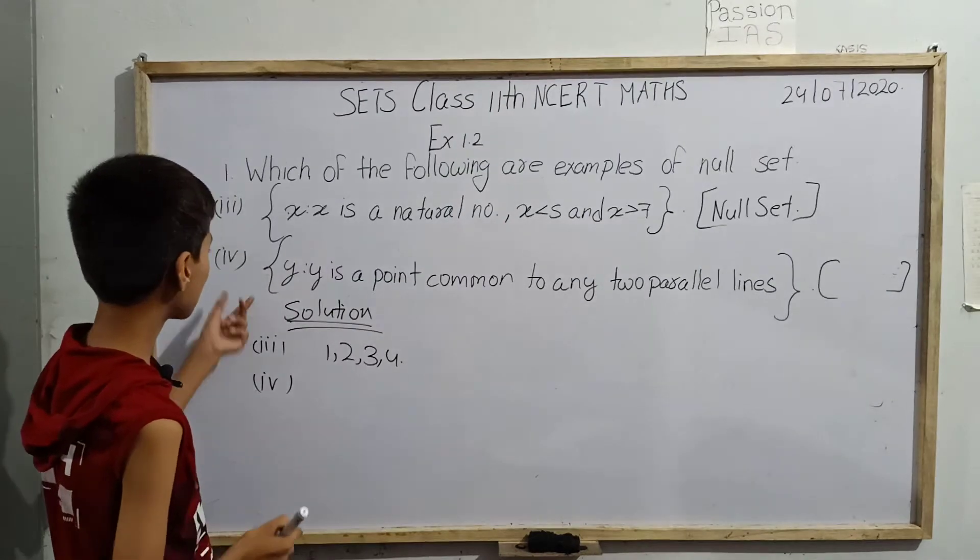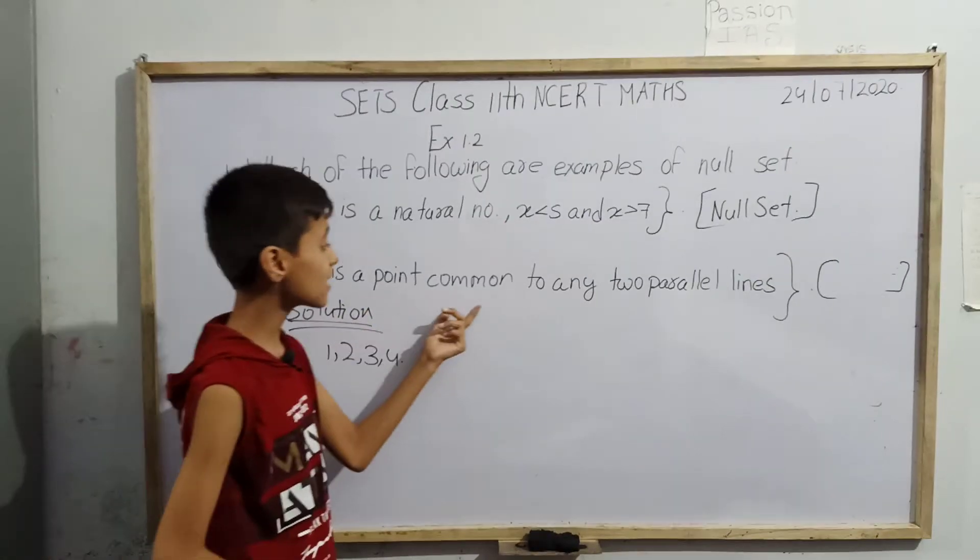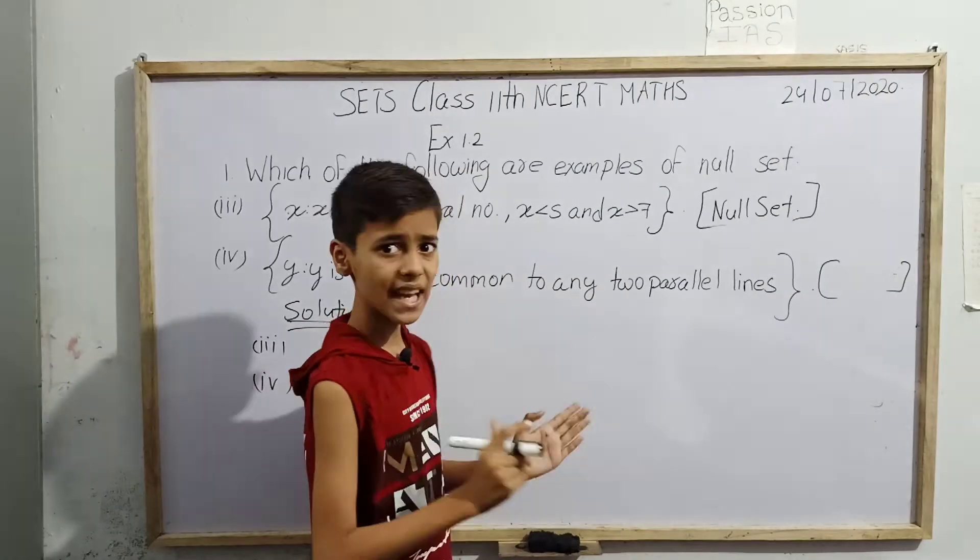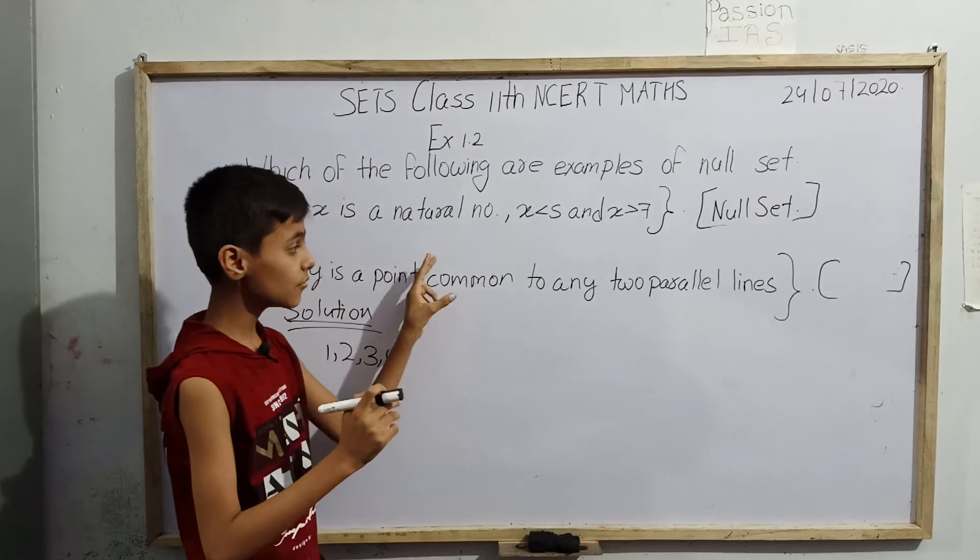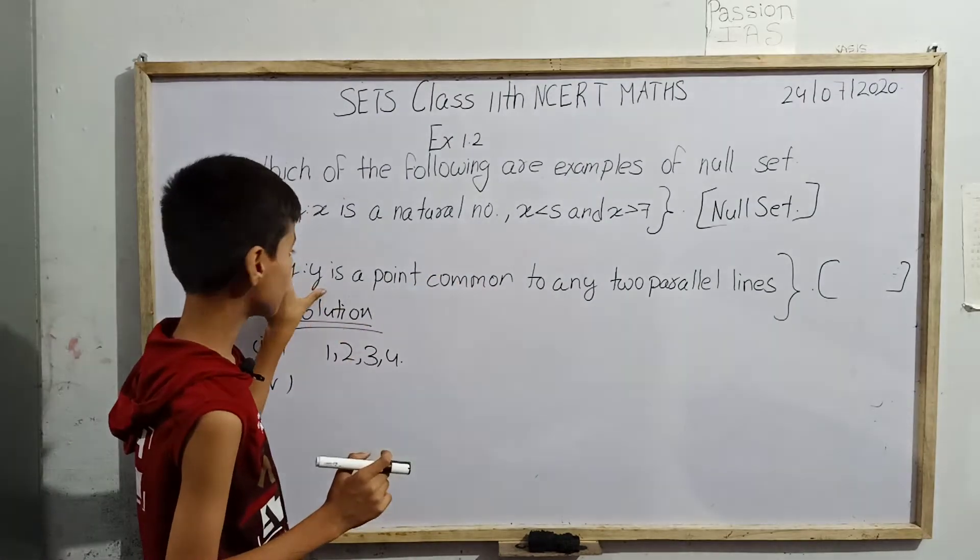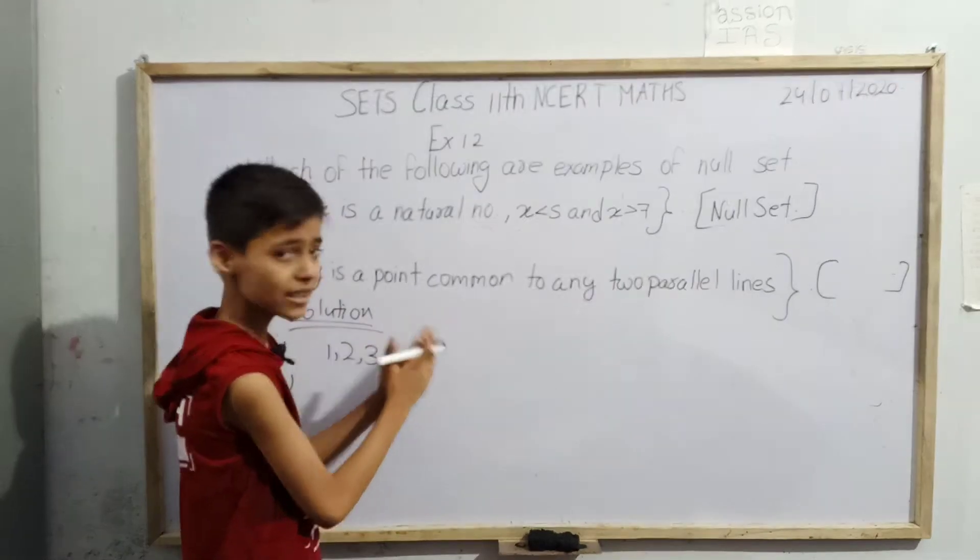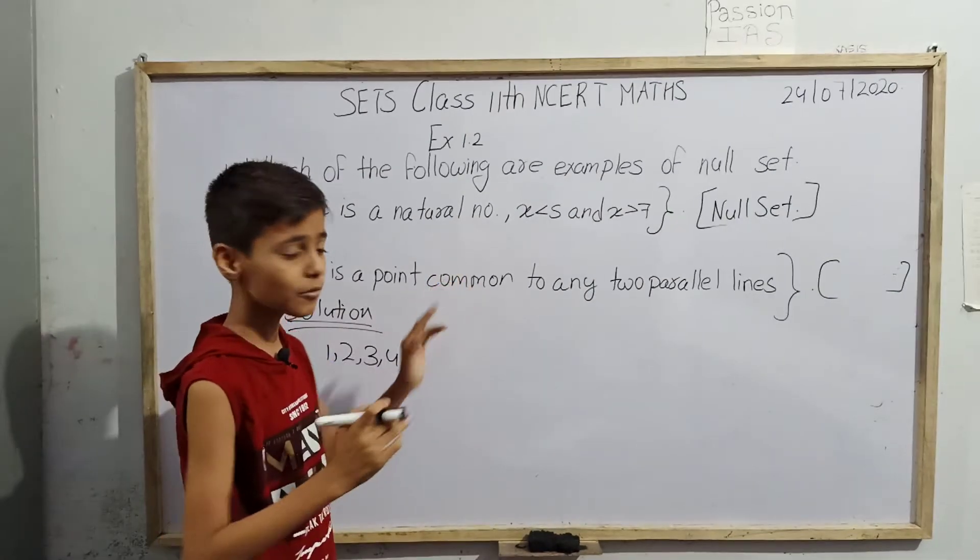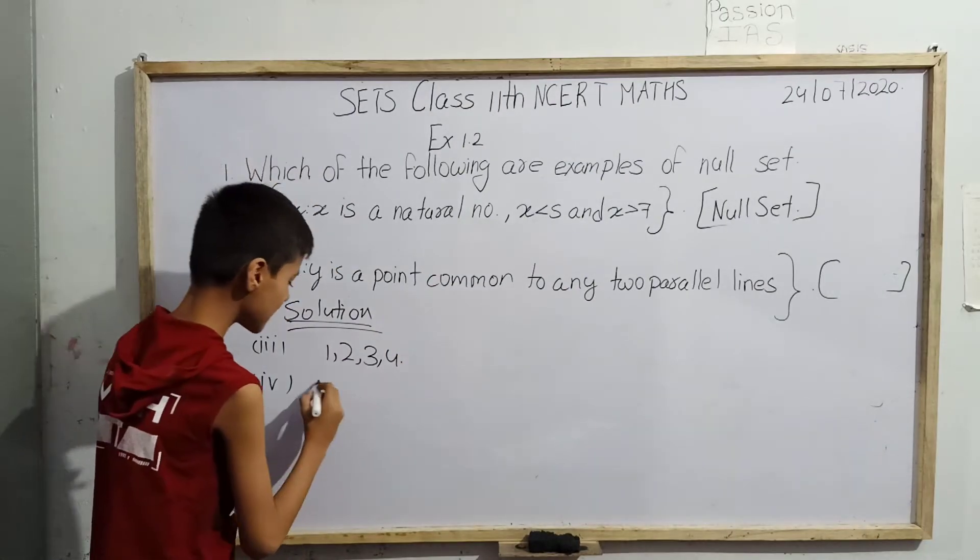Now let us move to fourth. Fourth: y such that y is a point common to any two parallel lines. We have to imagine about any two parallel lines, then find which information has been given by this set. We have to check whether y is a point common for any two parallel lines. Let us begin.